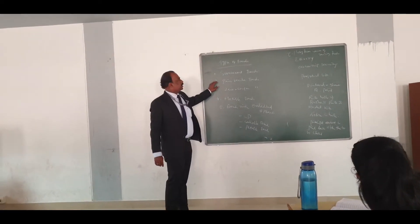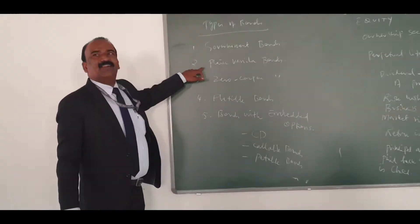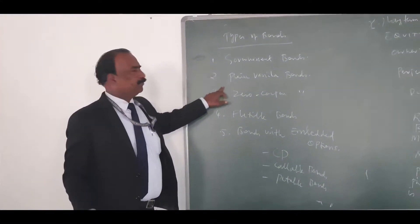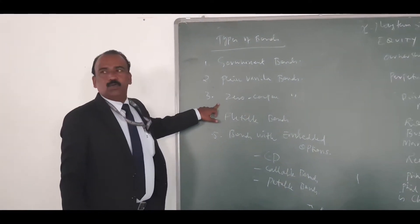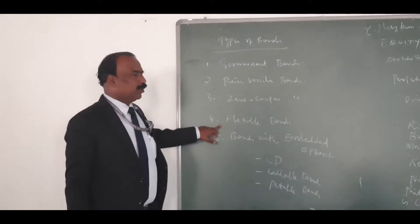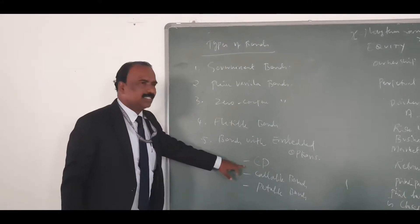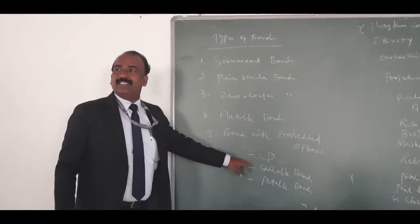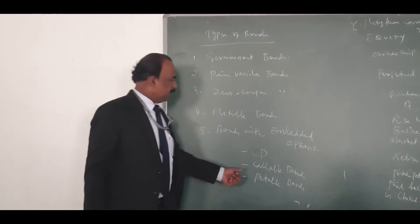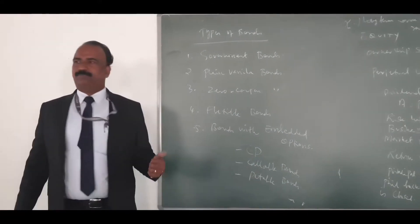Different types of bonds include government bonds, plain vanilla bonds or straight bonds, zero coupon bonds, flexible bonds, bonds with embedded options such as convertible bonds, callable bonds, and putable bonds.